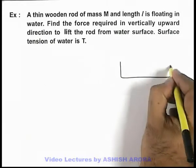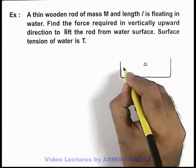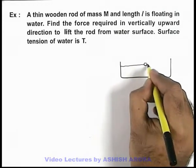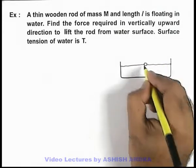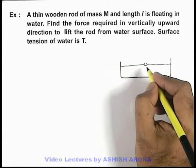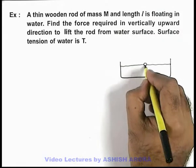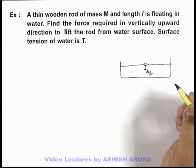Say this is the container in which a rod is floating. I am just drawing the cross section of the rod. Its length perpendicular to the plane of the sheet is l, and it'll be experiencing its weight Mg in downward direction.